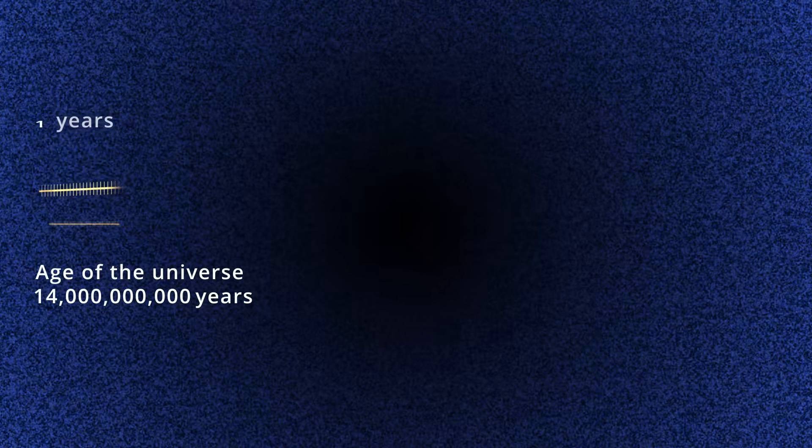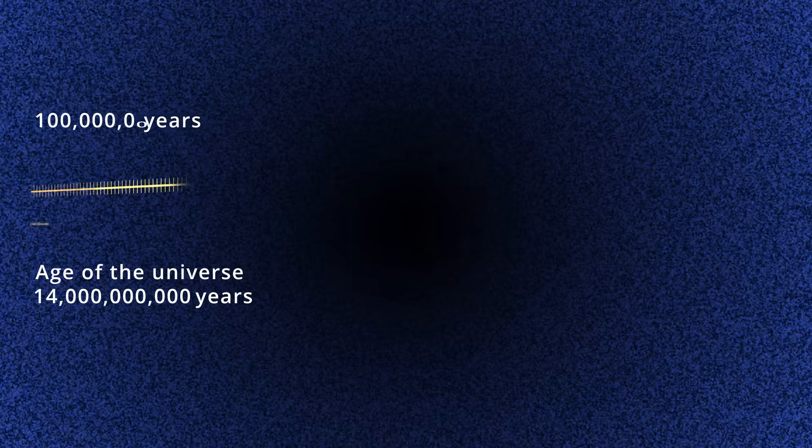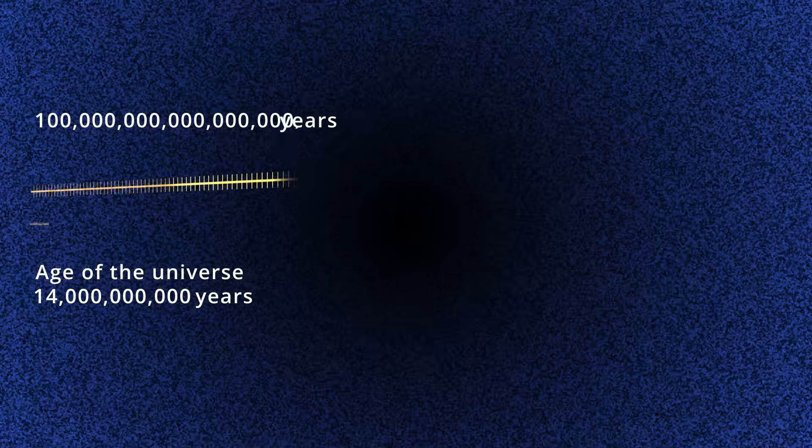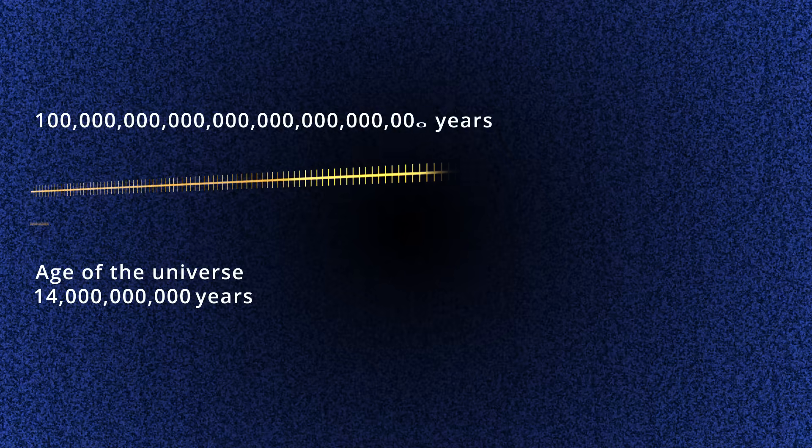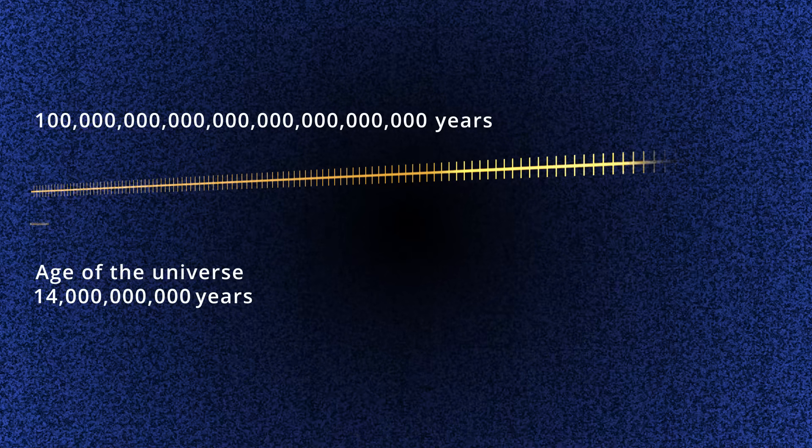In a nucleus, the neutrino-less double beta decay process may only happen once every 10 to the power of 26 years, dwarfing the 14 billion year age of the universe itself.